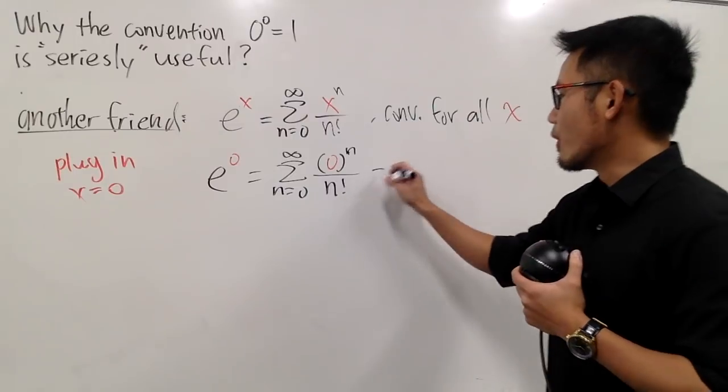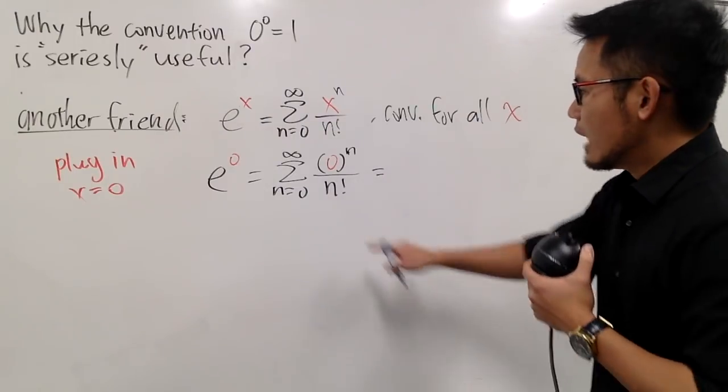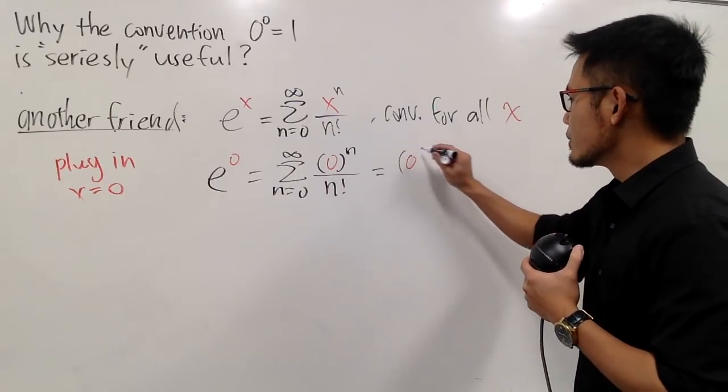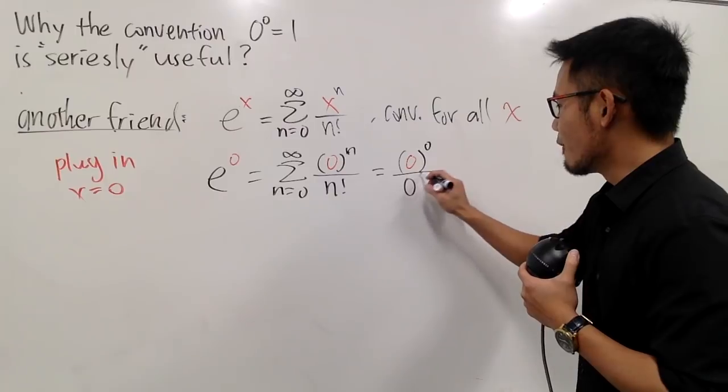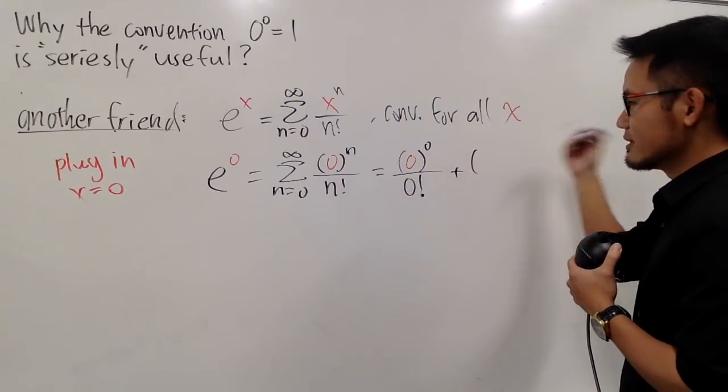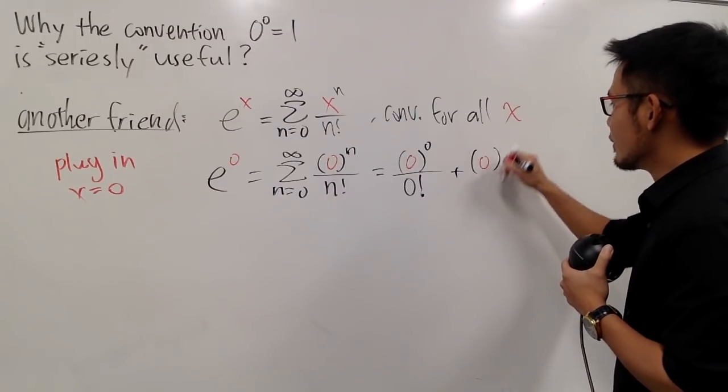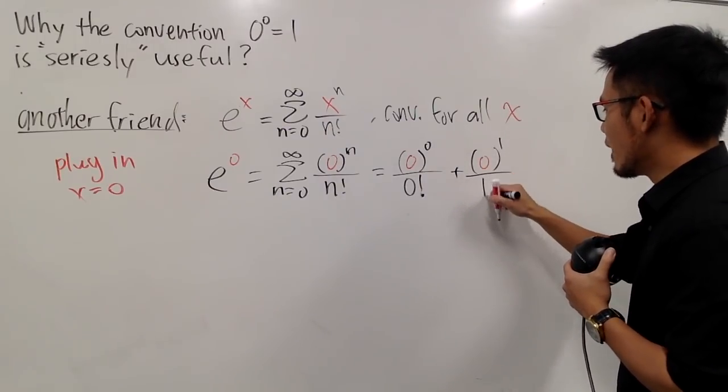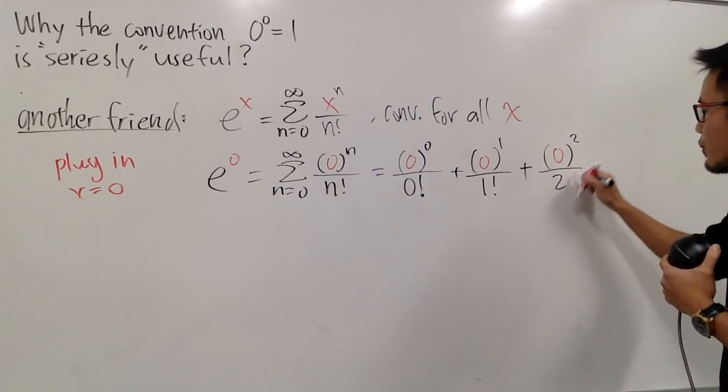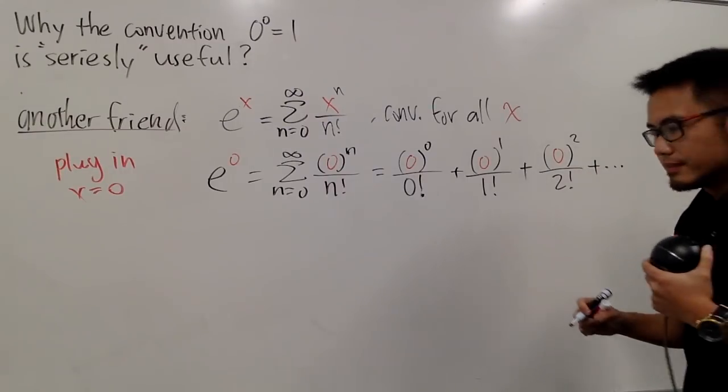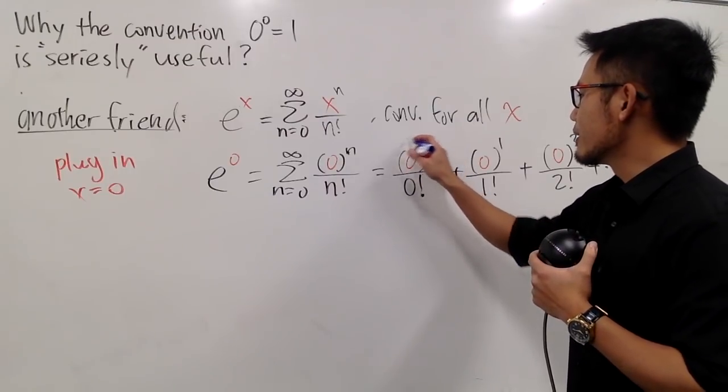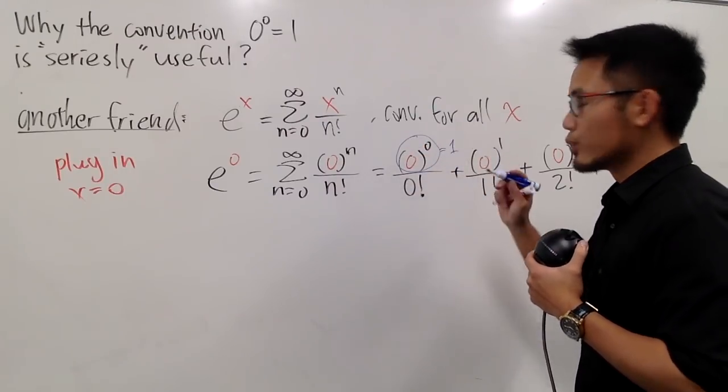And now, here's the write-out for this. I will plug in 0 into all the n's first. So, it seems that we have 0 to the 0 power over 0 factorial. And then what's the next term? Let me just write down the next term and then the next term. 0 when n is equal to 1, and then we have 1 factorial. And then the next term is 0 squared over 2 factorial and so on forever. Now, as I said earlier, 0 to the 0 right here, this is, by convention, is equal to 1.